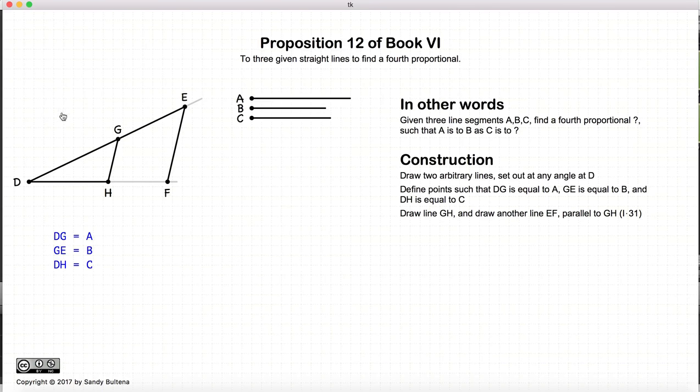So to restate this, DG equals A, GE equals B, DH equals C. These two lines are parallel, and thus the ratio A to B is equal to C to HF. In other words, HF is the fourth proportional.